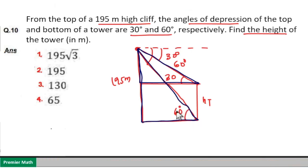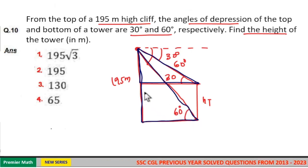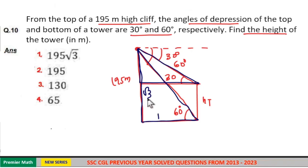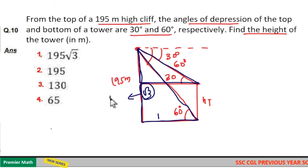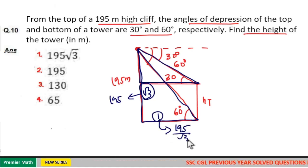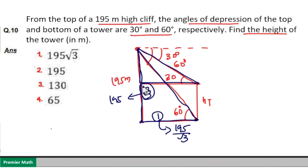From the larger triangle, tan 60° equals root 3, meaning the opposite side and adjacent side are in the ratio root 3 to 1. The root 3 part equals the total height of 195 meters, so one part equals 195 divided by root 3. This gives us the horizontal distance, which is constant for both triangles.